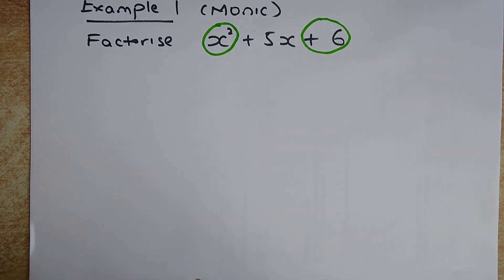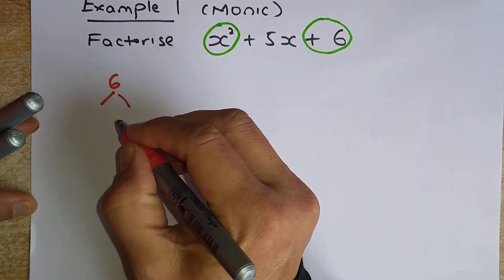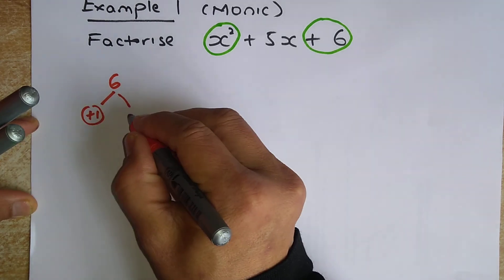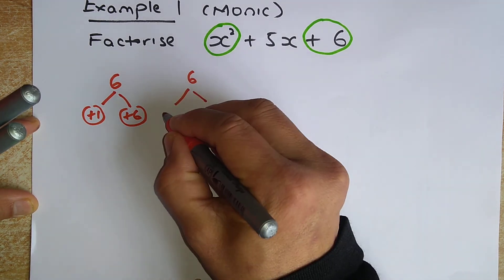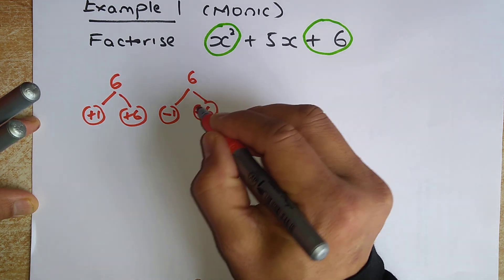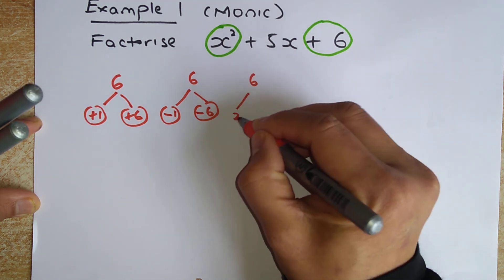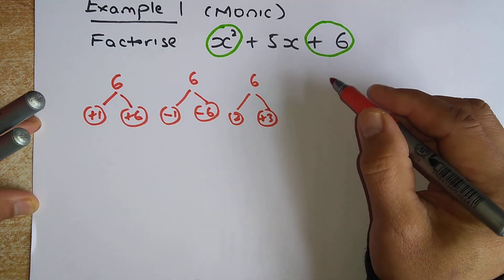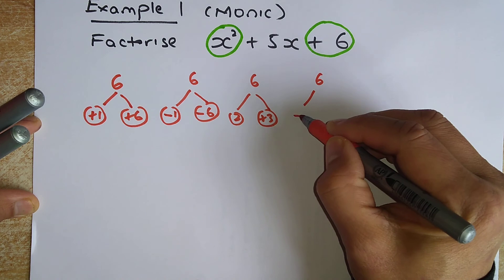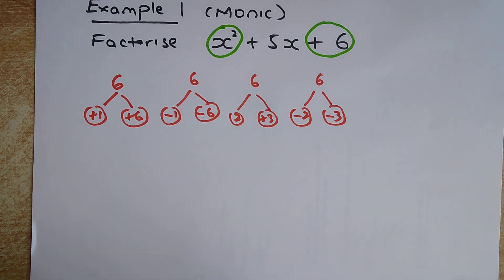We are going to find the factors of 6. The first option is plus 1 and plus 6 — multiply them and you get 6. The second option is minus 1 and minus 6 — multiply them together and you still get 6. The third option is plus 2 multiplied by plus 3, which also gives you 6. And the last option is minus 2 multiplied by minus 3. So all four factor pairs multiply to give you 6.